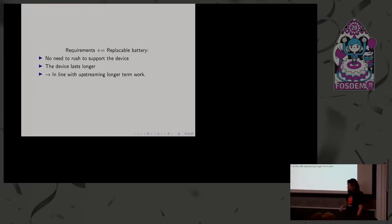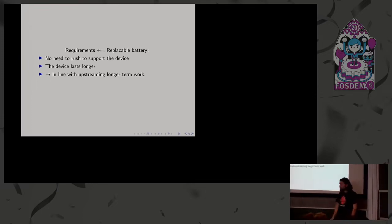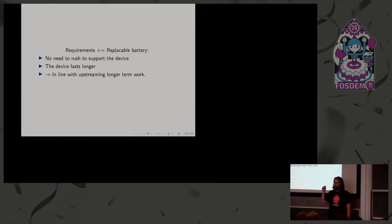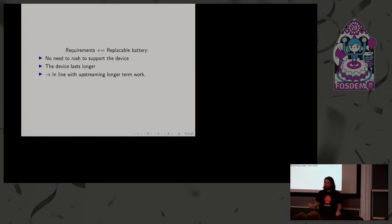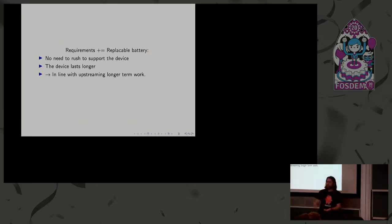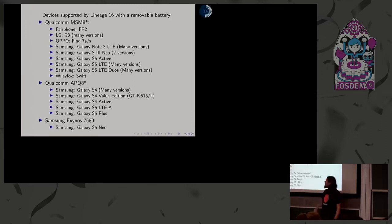Because of all that, we decided to require in Replicant that any new supported phone or tablet must have a replaceable battery — so developers can continue to support the device long-term. Even if you need tools to open it, that's okay, but if you need a heat gun to detach it, that's too complicated. It also makes the device last longer, is better for upstream work since upstream takes time, and is better for people buying second-hand — you can replace the battery without worrying about degraded capacity.